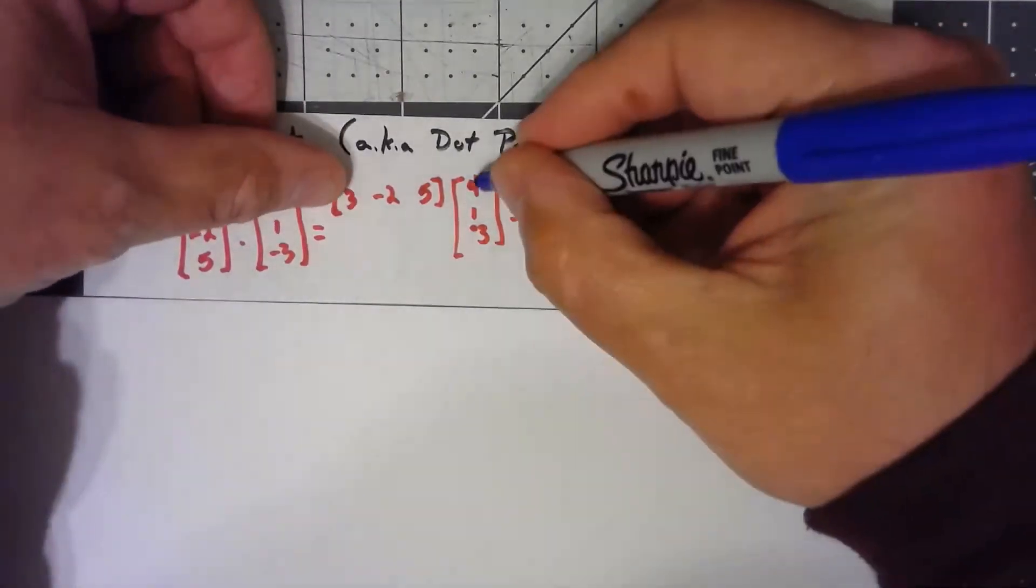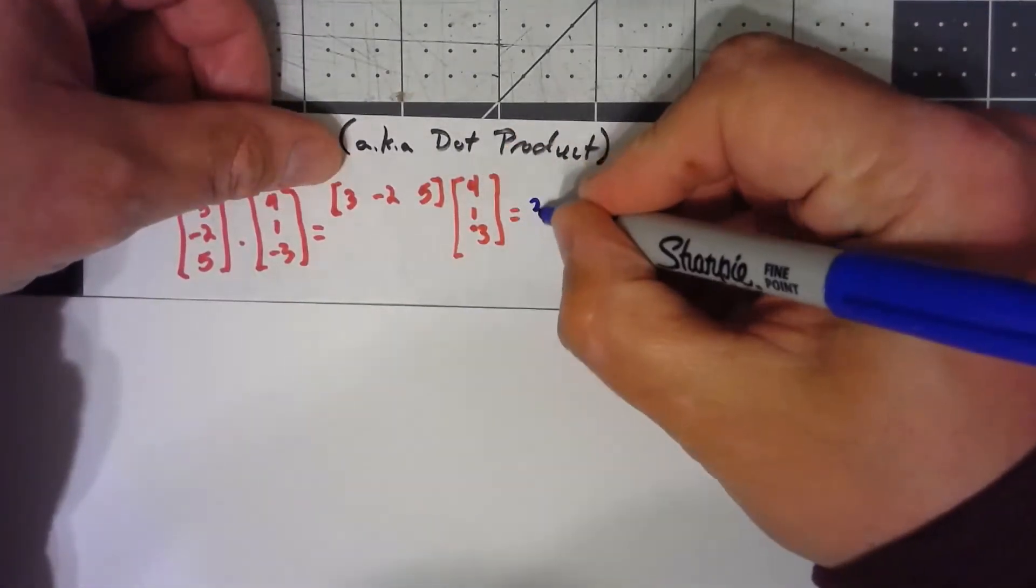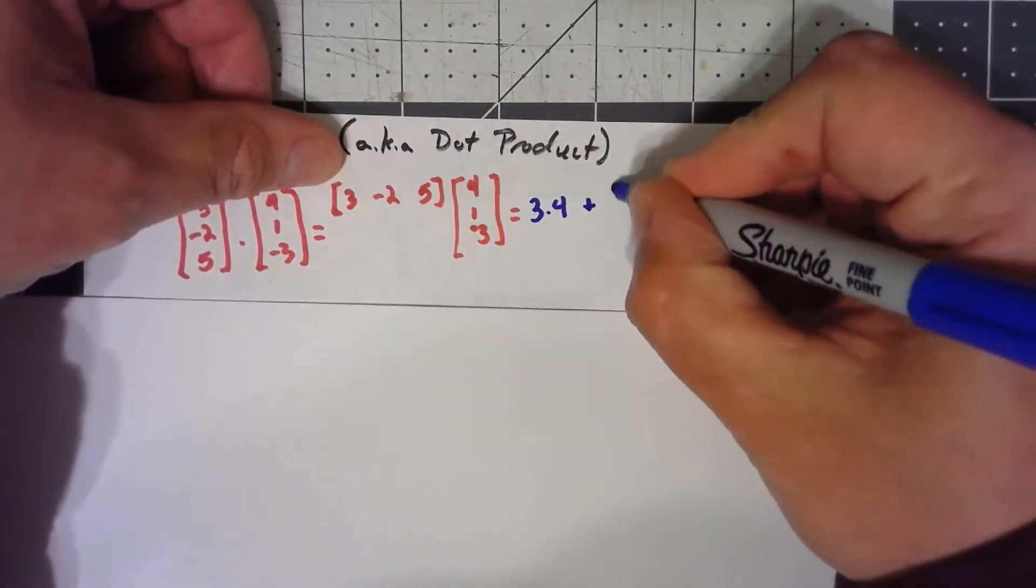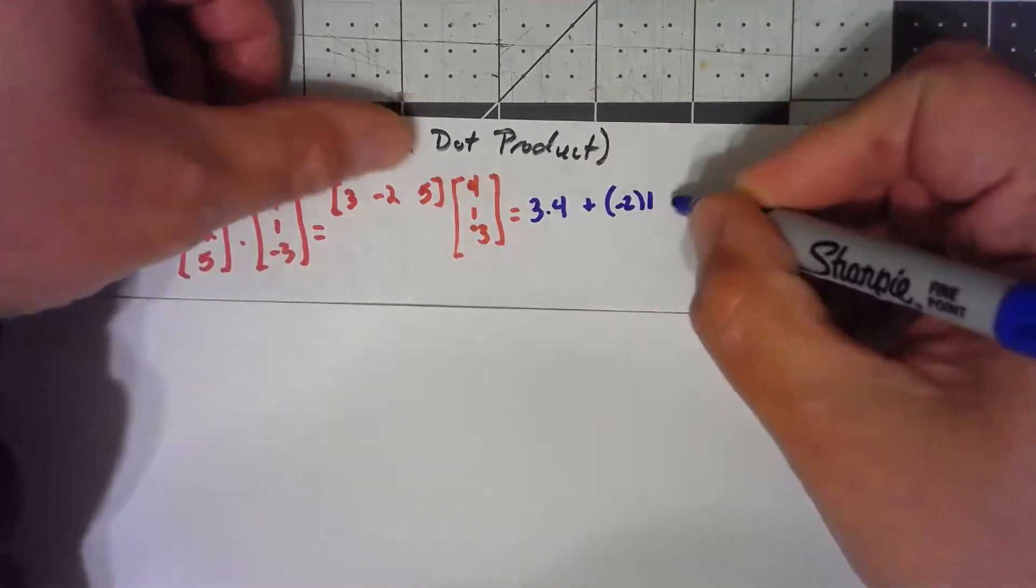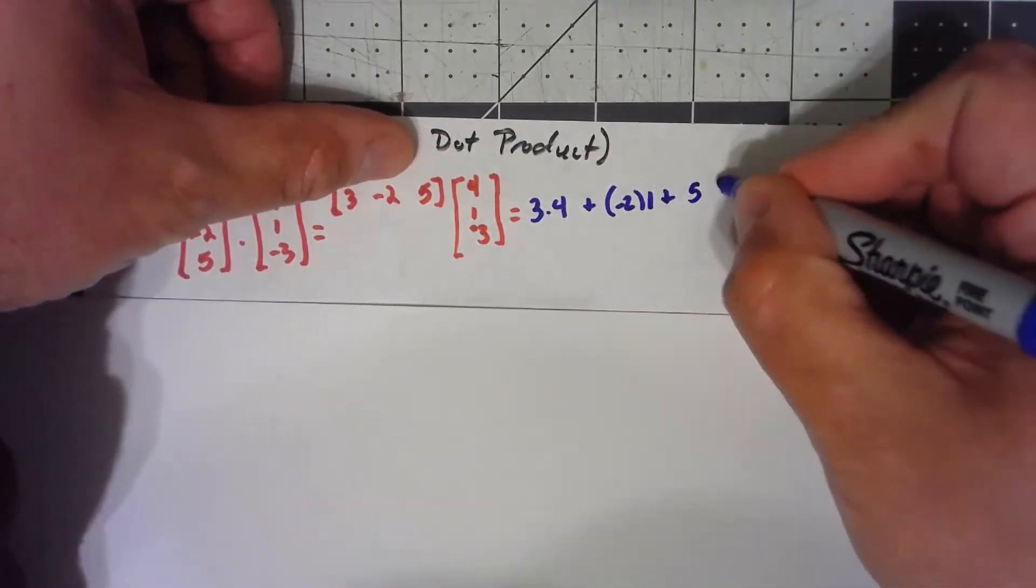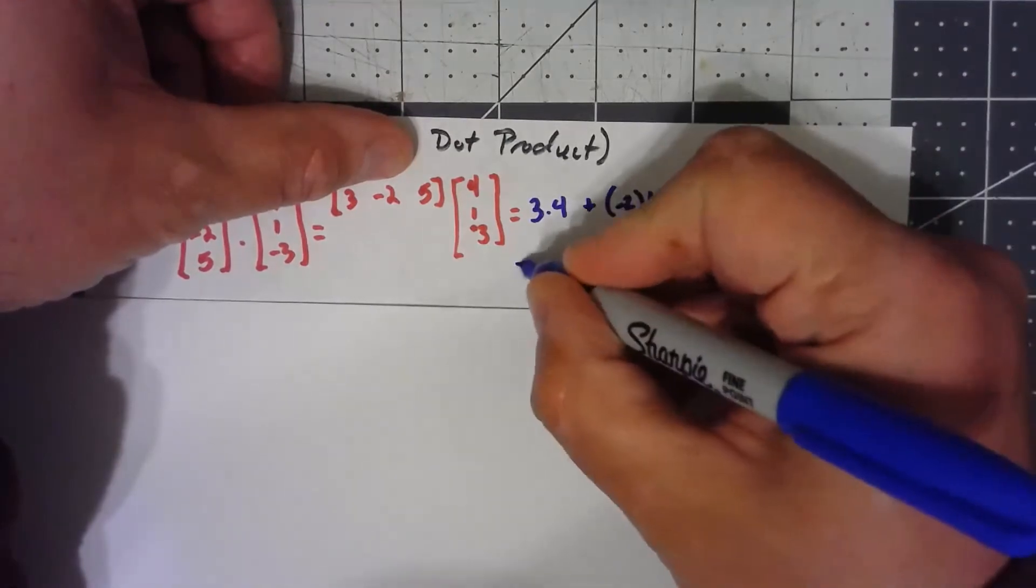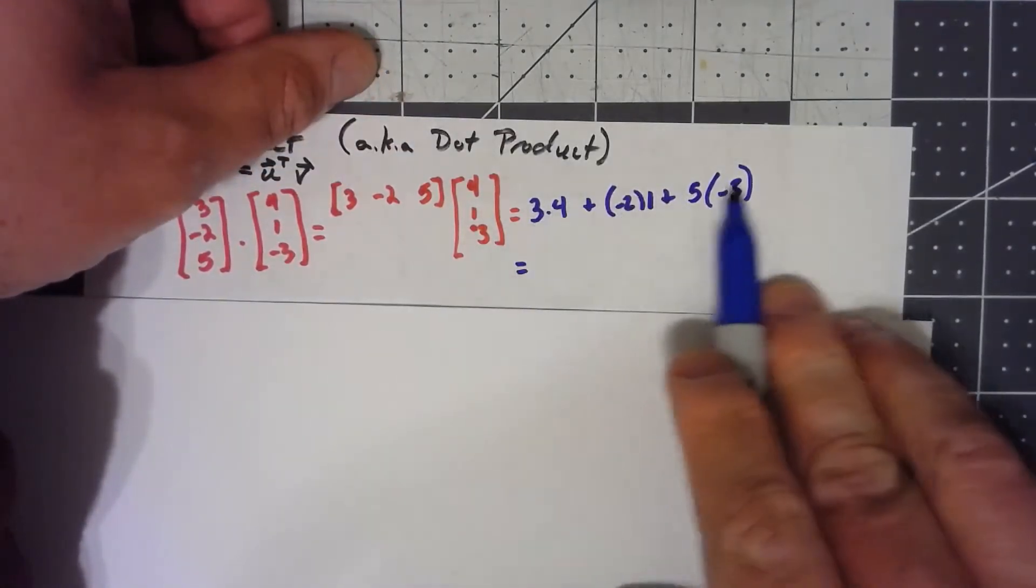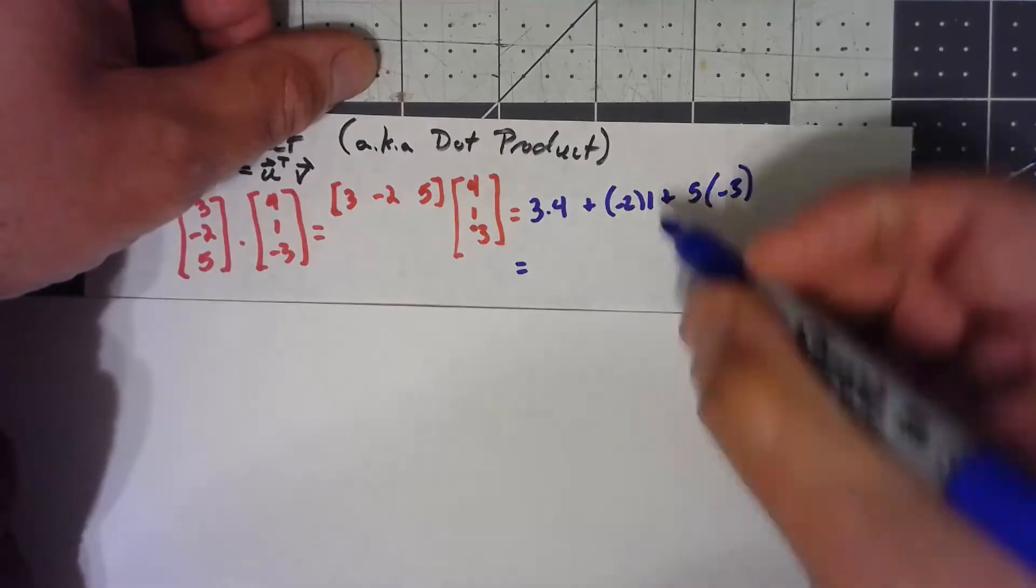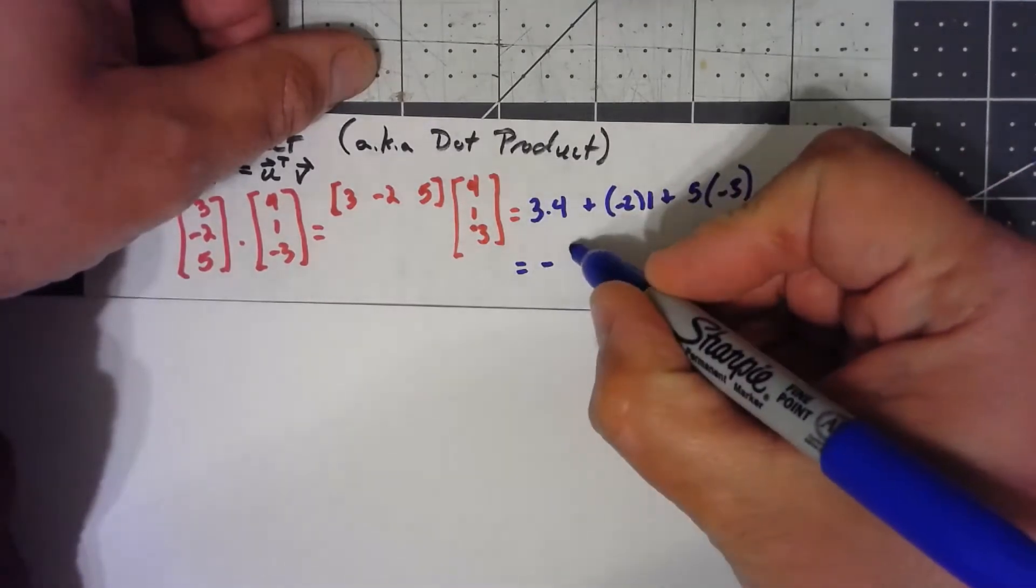So we pair them up, we take 3 times 4, plus negative 2 times 1, plus 5 times negative 3. So 12 minus 2 minus 15 is negative 5.